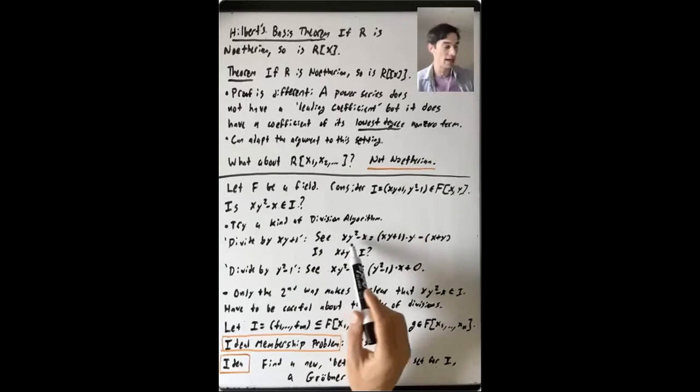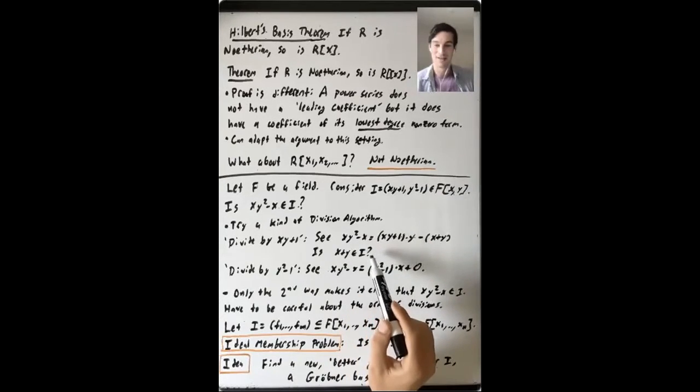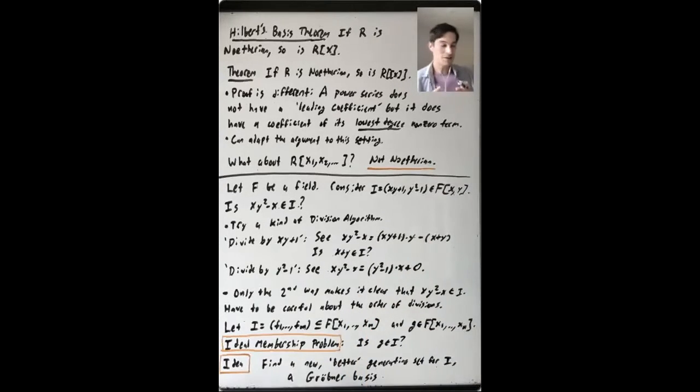But if you did it the first way, it's not so clear. So the thing that's going on here is you have to be careful. There are two different kinds of divisions you could do, and you have to be careful about the order that you do them in.